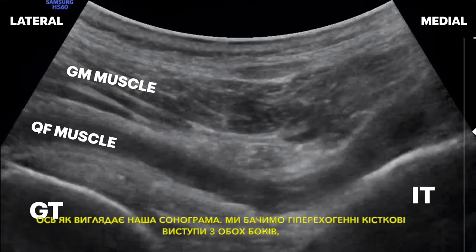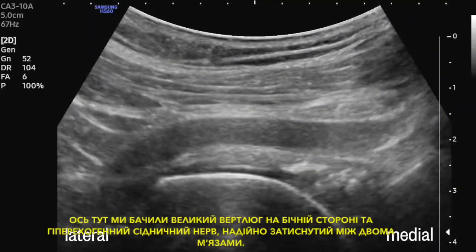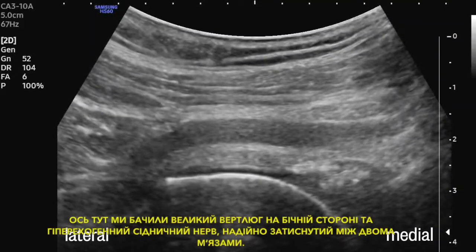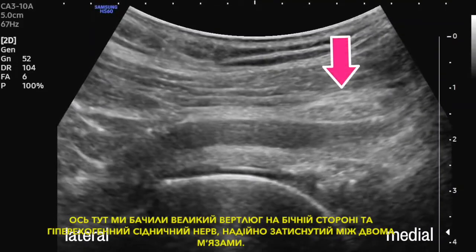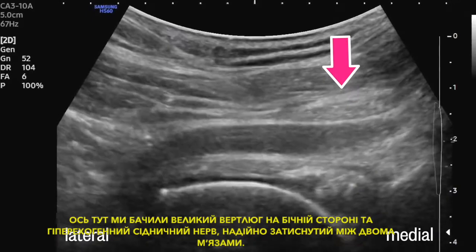Here's what our sonogram looks like. We see the hyperechoic bony prominences on either side and the oval or triangular sciatic nerve sandwiched between the gluteus and the hammock-like quadratus. Here we see the greater trochanter on the lateral side and the hyperechoic sciatic nerve nicely sandwiched between the two muscles.